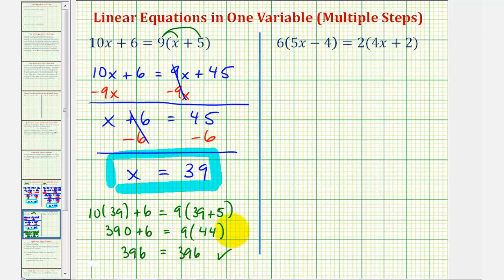Now let's take a look at our second example. Again, our first step is to simplify the left side and right side as much as possible. So we'll start by distributing to eliminate the parentheses. We'll distribute positive 6 here and we'll distribute positive 2 here.